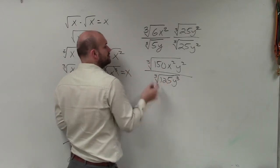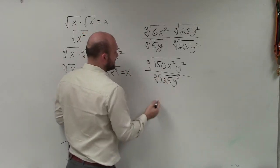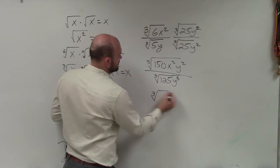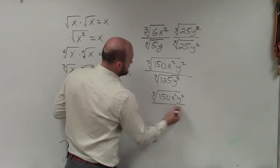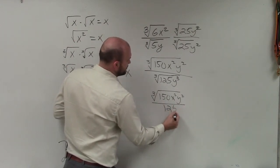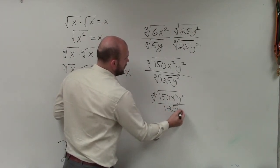and the cube root of y cubed, which is just going to be y. So therefore, I have 3 cube root of 150 x squared y squared divided by 5y.